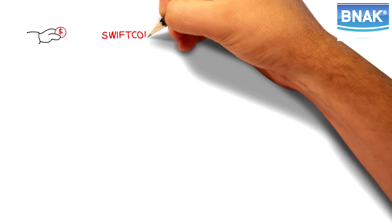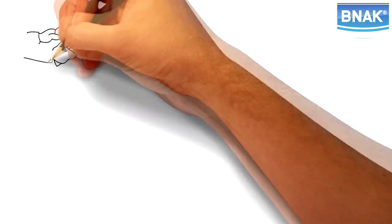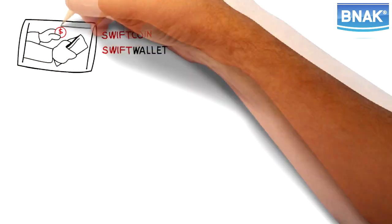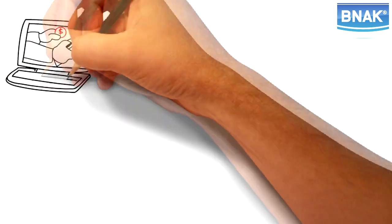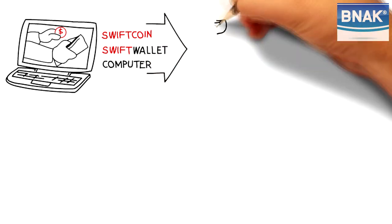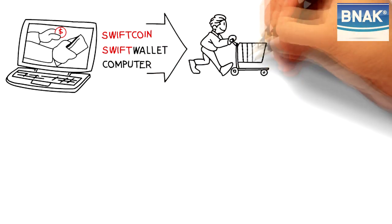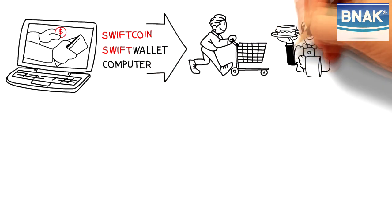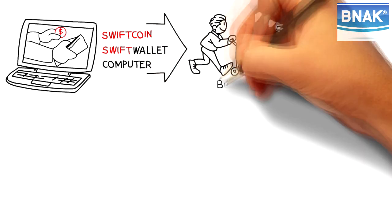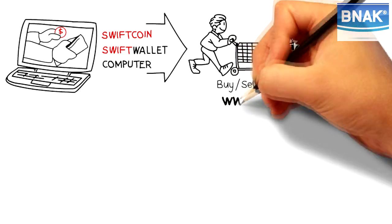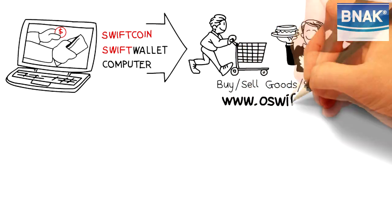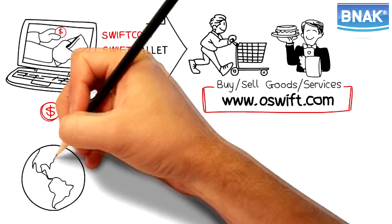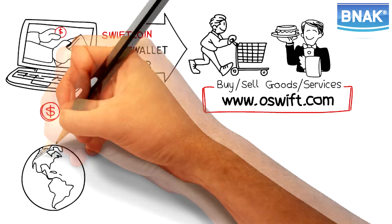Where do I keep my SwiftCoin and where can I spend it? Your SwiftCoin is stored in your SwiftCoin wallet on your computer. You can use SwiftCoin to buy and sell goods and services on the internet at www.oswift.com, or use it to send money to anyone around the world in seconds.